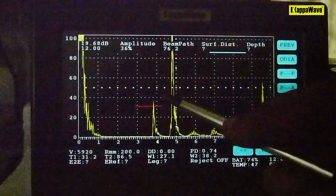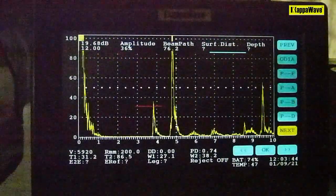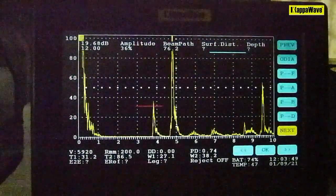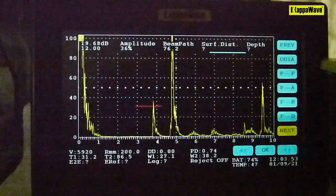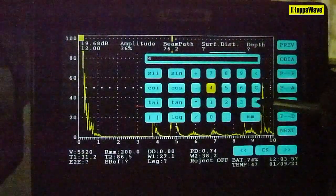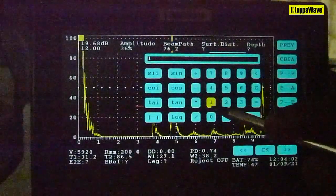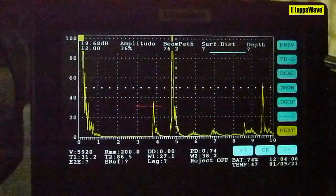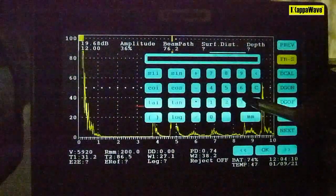This signal corresponds to 3.17 millimeter in steel. And now to continue with this DGS evaluation, I have to provide the details, like the probe frequency entered as 4 megahertz and the probe diameter as 10 millimeter. And now we will go into the flat bottom hole size, this is 3.17.